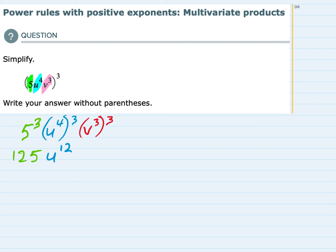And the same rule applies for the v. The power inside gets multiplied with the power outside, so that's v to the 3 times 3, which is 9. And we have simplified this and removed all the parentheses.